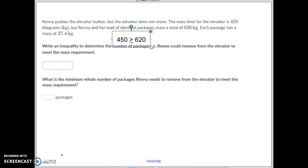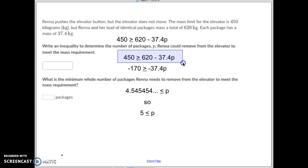Each package has a mass of 37.4. So we're going to have to remove some packages of 37.4 kilograms, and we'll call that X for the moment. Write an inequality to determine the number of packages P. Okay, X turns to a P now. We could remove. Here's my inequality right there.